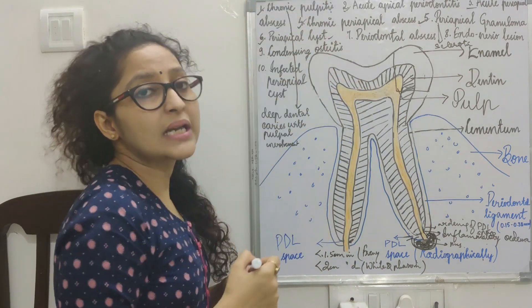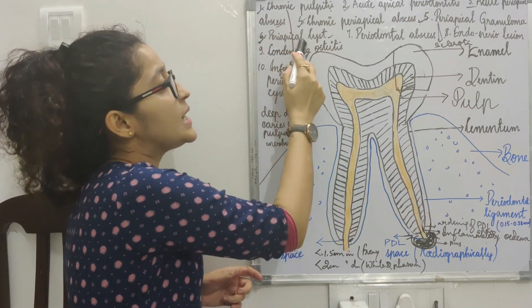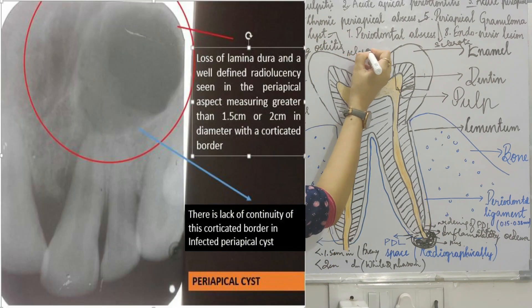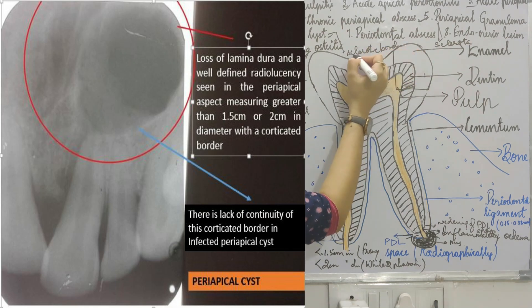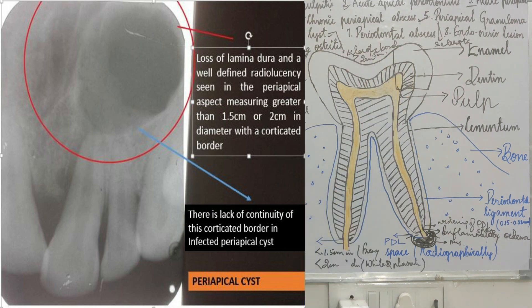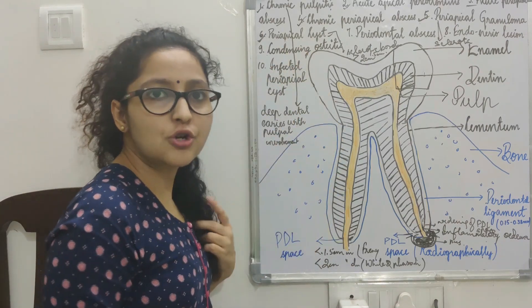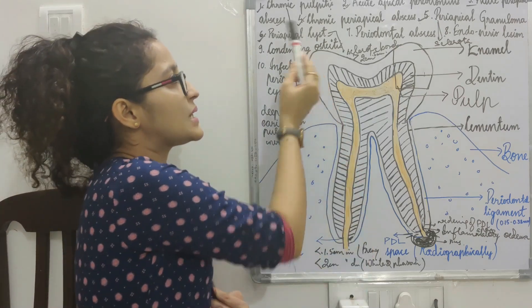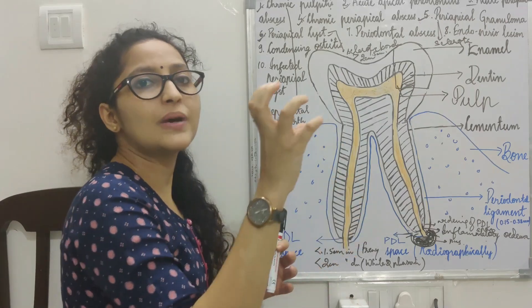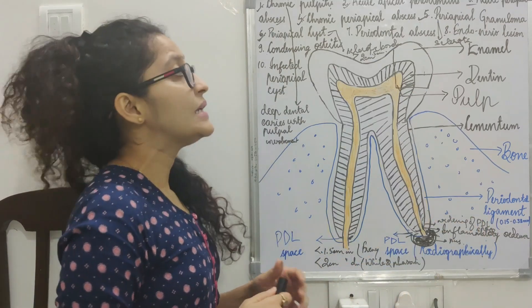In periapical cyst, you will again see a well-defined radiolucency with a definite sclerotic border, and it will be greater than 2 cm or greater than 1.5 cm depending on what is taught in your college. It can also present with resorption of the root in some cases, and there can be displacement of the adjacent tooth when the cyst enlarges.